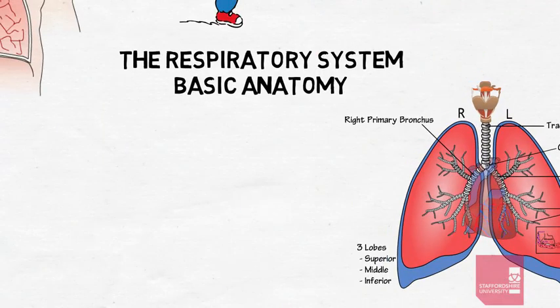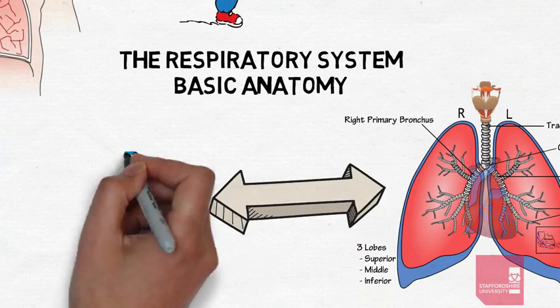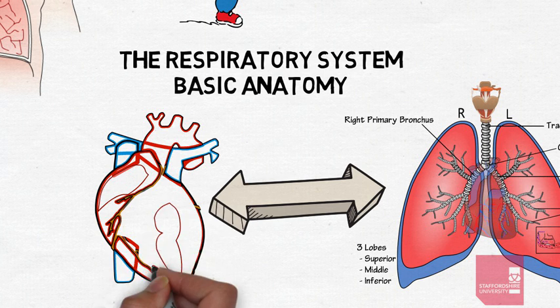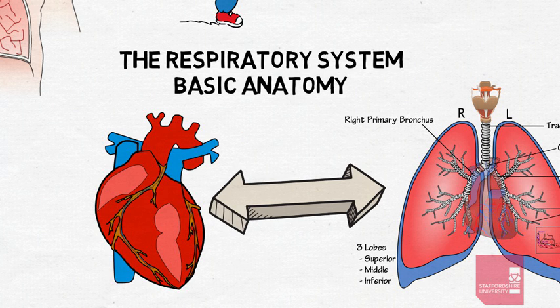Oxygen transfers from the air to the blood, with carbon dioxide, the waste product, being transferred out. The heart can then pump blood around the body supplying oxygen to all cells.